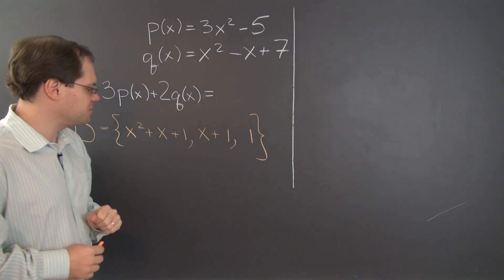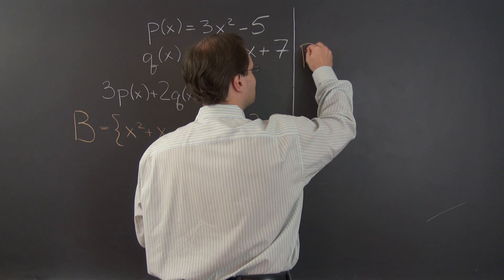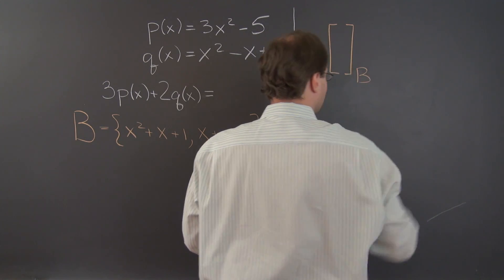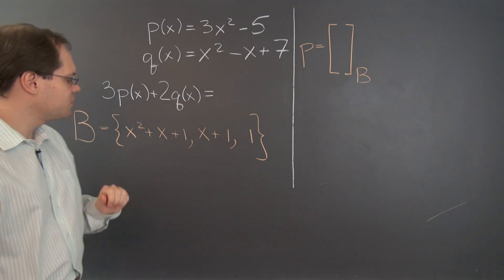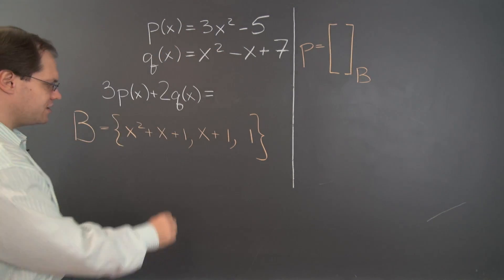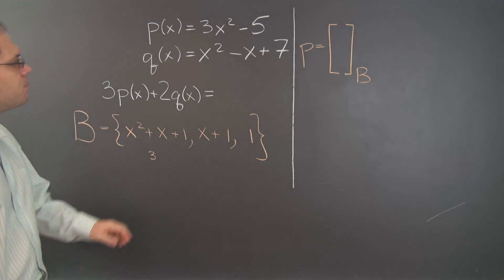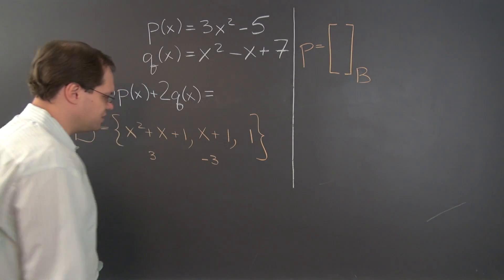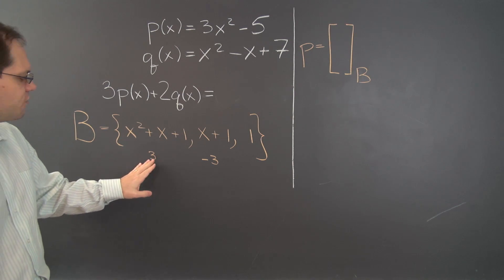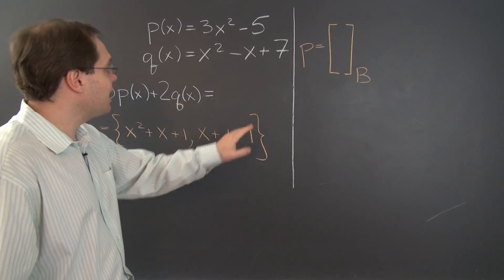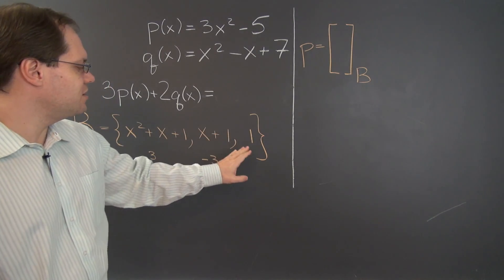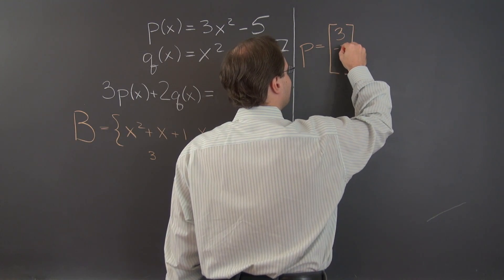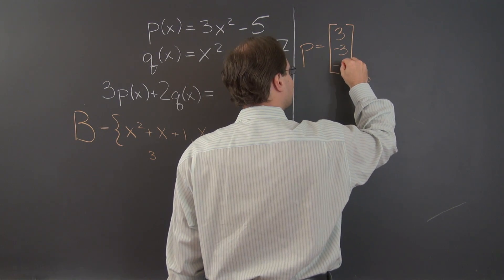Let's decompose the polynomial p with respect to this basis. We find that p equals — you may have to review decomposition, but using our bootstrapping approach: to get 3x squared, we need to take 3 of this polynomial. Then there's no x here, so we have to cancel x with this polynomial, so we take negative 3 of this polynomial. For the free term, we so far have 3 minus 3, so we have to take negative 5. So p equals 3, negative 3, and negative 5.